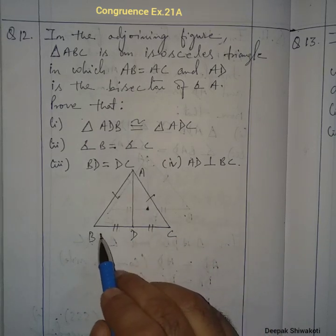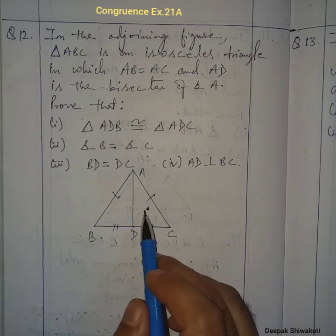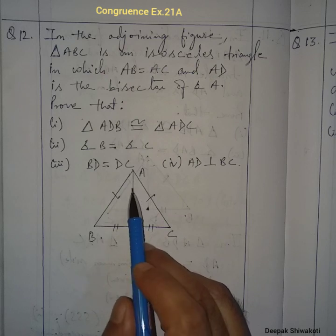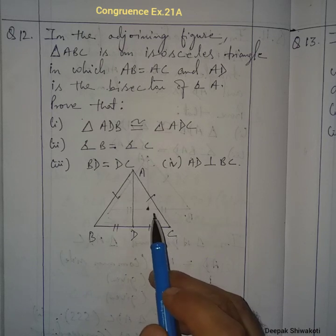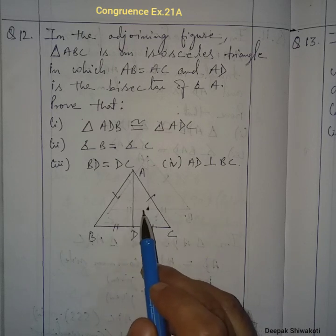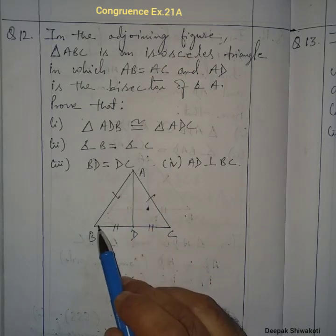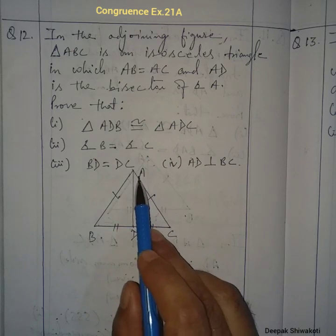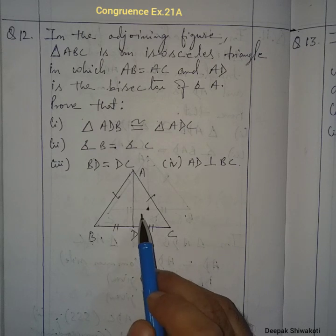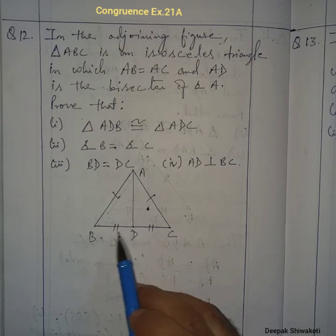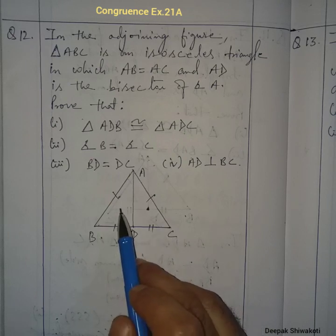BD equals DC is given in the figure. We could go for SSS condition, but since AD is the angle bisector, AB corresponds to AC, AD is the common side, and BD corresponds to DC — we will use the Side-Angle-Side condition.